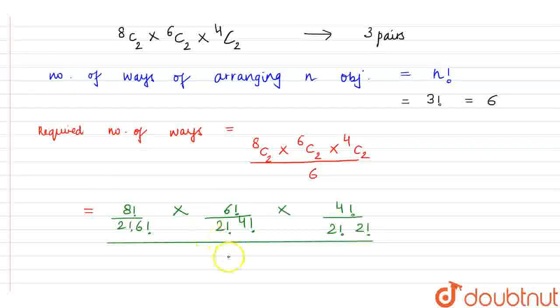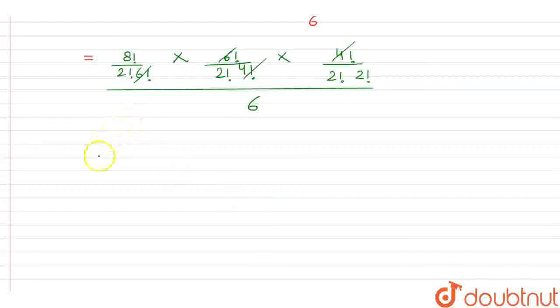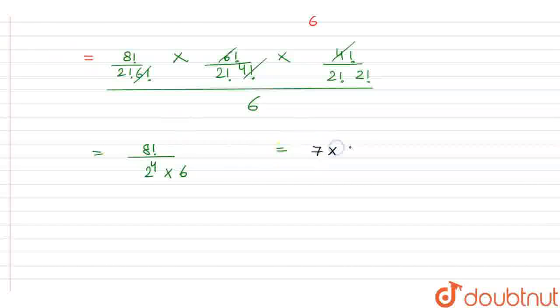So this and this gets cancelled. What are we left with is that 8 factorial upon 2 to the power 4 into 6. If we further simplify this it becomes 7 into 6 into 5 into 4 into 3. We have cancelled this 8 by 2 to the power 3 and here 1 2 is left which gets cancelled by 2 which was present here. This whole upon 6, so this 6 and 6 will get cancelled.